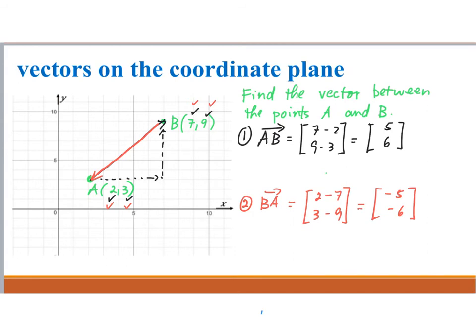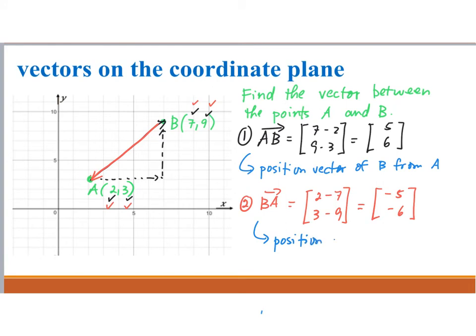Here we stress that order is important. We have a special terminology for this: vector AB is called the position vector of B from A, or the position vector of B relative to A. Similarly, the vector BA is the position vector of A from B, or the position vector of A relative to B.